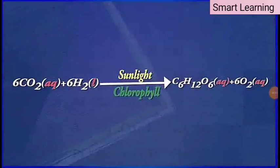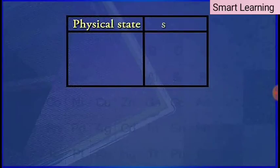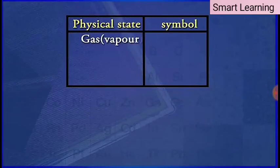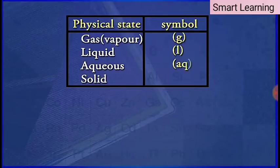A chemical equation is made more informative by mentioning the state of the reactants and the products along with their chemical formulas. The gaseous, liquid, aqueous, and solid states are abbreviated differently as (g), (l), (aq), and (s) respectively.